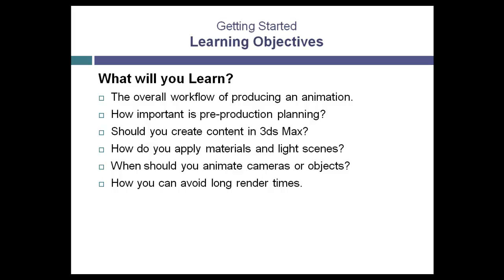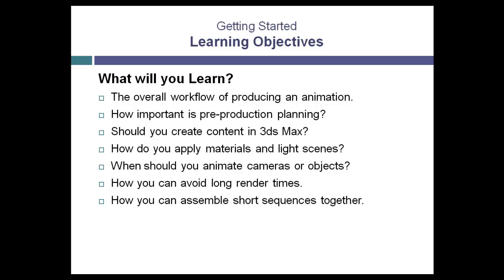Once you've rendered all your images, in order to play them back and develop the storyline formed in the pre-production planning stage, you'll need to assemble the sequences together into a completed production. This is accomplished both inside 3ds Max and outside using a program like Autodesk Composite to add animation layers to the final production.